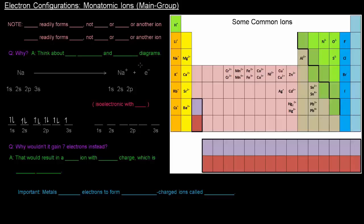More specifically, we're going to talk about the main group monatomic ions, which are the group 1A, 2A, 3A, 4A, 5A, 6A, 7A, 8A.